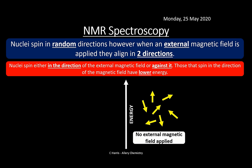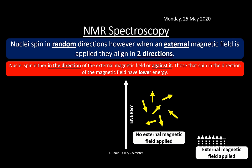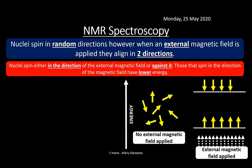Looking at the diagram: with no magnetic field, the yellow arrows representing spin point in all sorts of random directions. When a sample is placed in the NMR machine and the external magnetic field is applied (shown by white arrows), nucleons align into two levels — some spin with the field (lower energy) and some spin against it (higher energy).